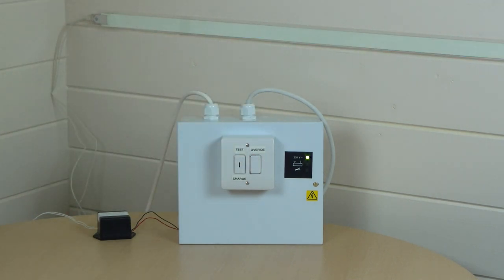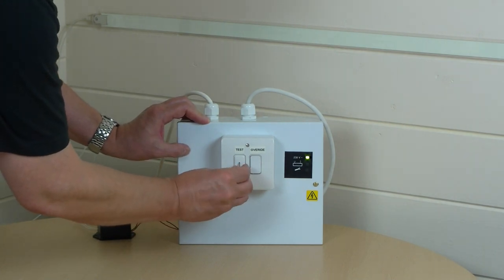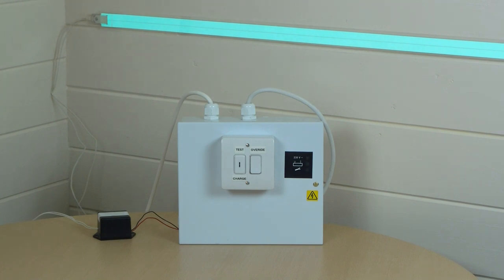Now to test the battery backup, we've got a small key we put into the test slot and switch it on, and there is the Light tape being driven directly from the battery and the mains is now disconnected.